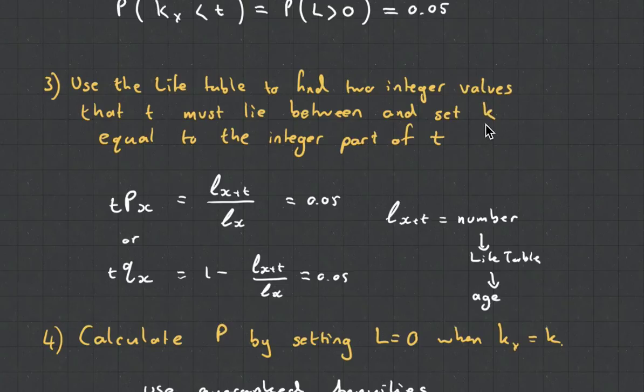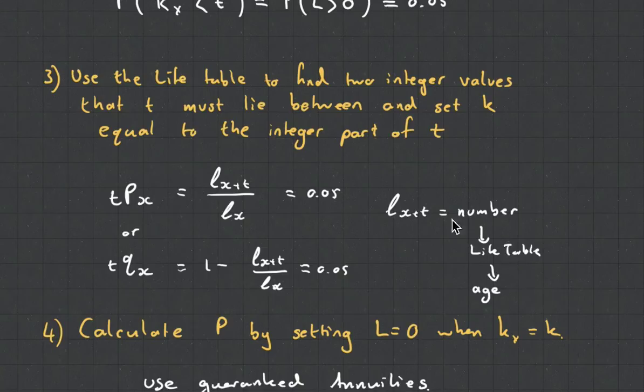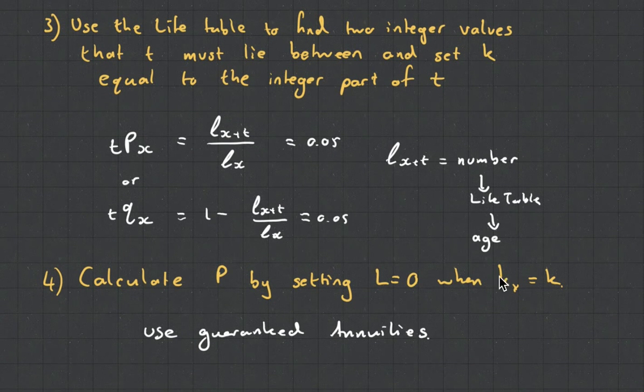This is where we can use the life tables to find two integer values that T must lie between and set K equal to the integer part of T. Why must we set it to the integer part? Because it's not a complete life, it's the curtail life. So what we do is we go TPX, we look for 0.5. You just take the age, you times it by 0.5, and then you look for this LX+T, and then you subtract and you get your age. And then you calculate P by setting L equal to 0 when KX is equal to that. It is a little bit confusing, so please do lots of examples of these type of questions. Don't think that this video is enough to help you get through this.